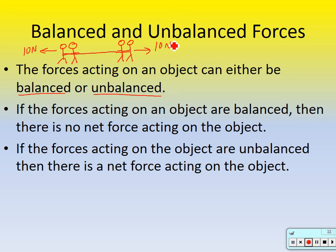If the forces acting on an object are unbalanced, then there is a net force acting on the object. So now if one side starts pulling with 20 newtons, there's an unbalanced force. What's the net force? Ten newtons to the left — because they're pulling with 10 newtons more than the other side. So they're going to start moving to the left.